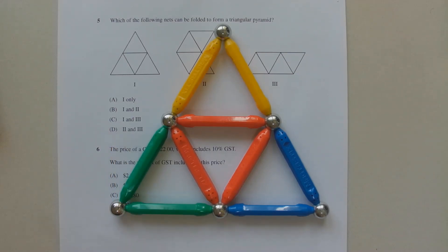So option D is incorrect, since it does not include net number one.